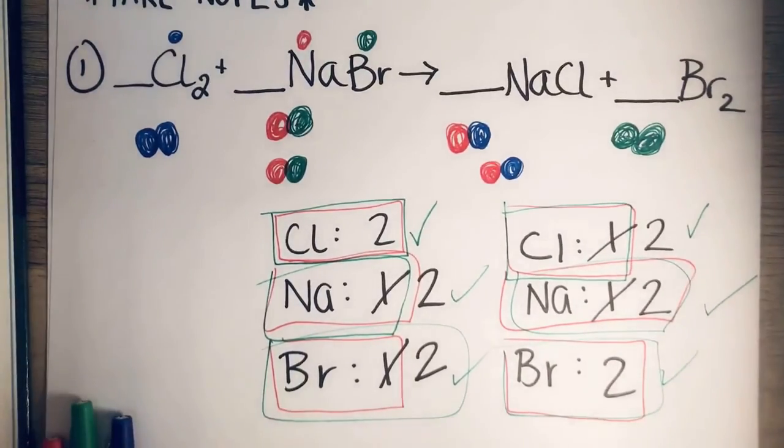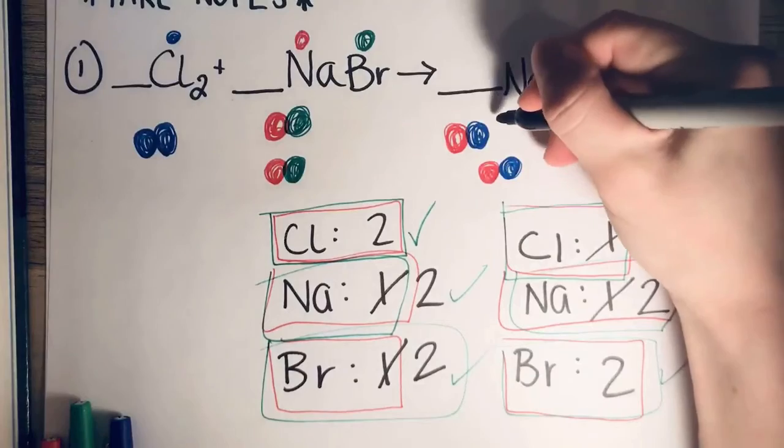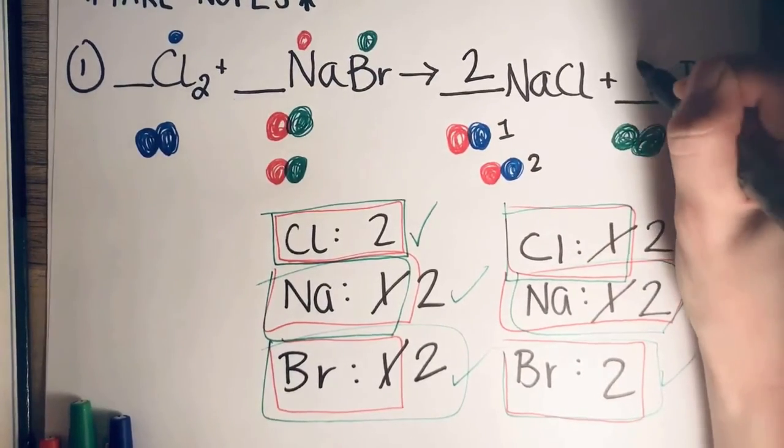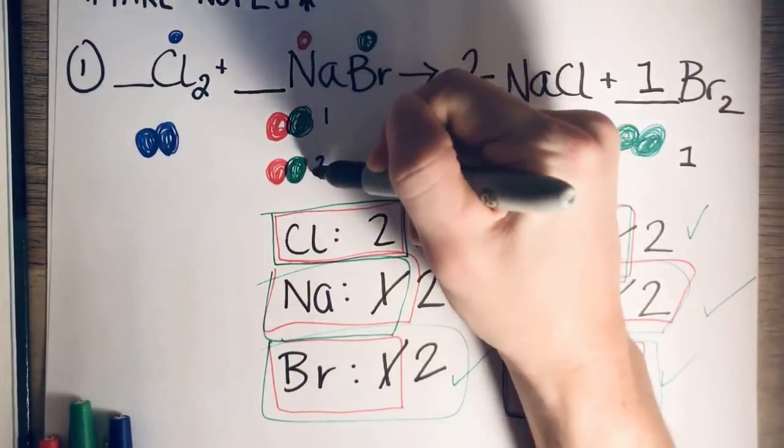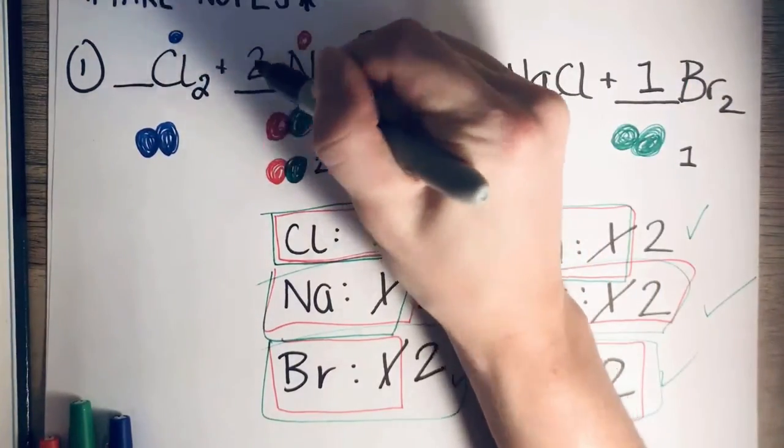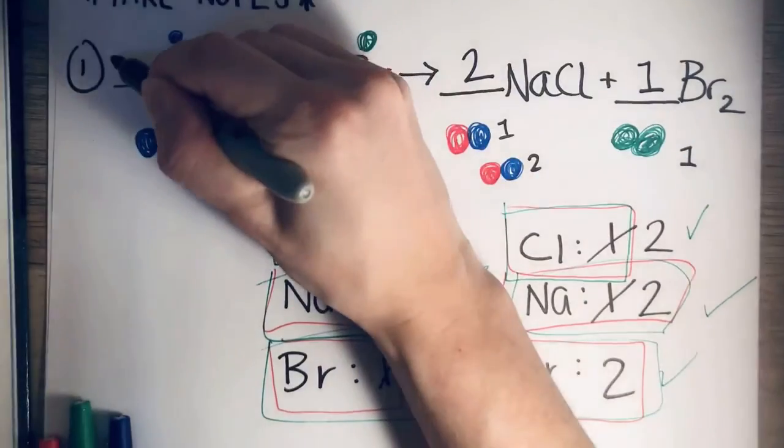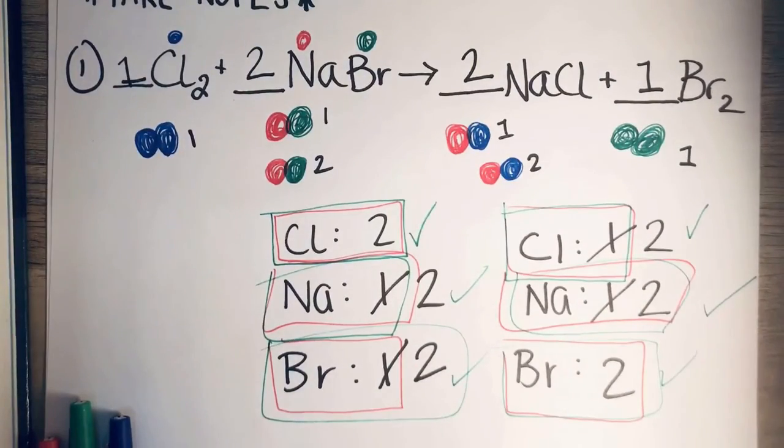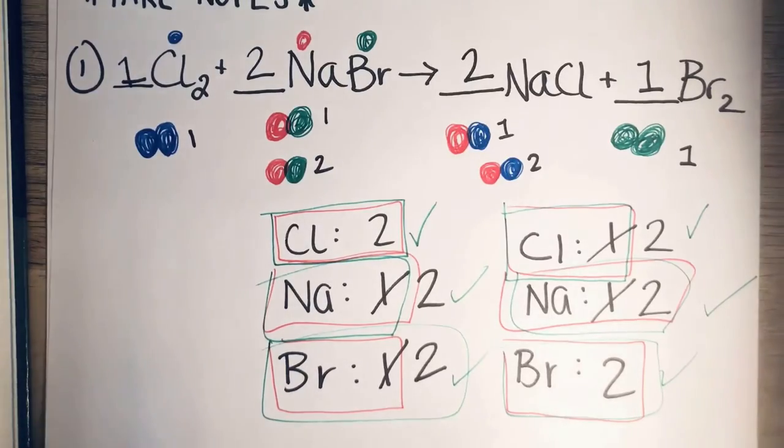My final step here is to count how many particles of each chemical formula I have drawn. Because that's how I need to get my coefficients done. If I don't fill in the coefficients, I haven't actually solved the problem. So I have one, two NaCl's. So there's going to be a two there. I have one Br2 particle. Yes, there's two Br's, but there's just one particle of Br2. I have two NaBr's. I have one Cl2. So I end up with the same answer that I got using the math method.